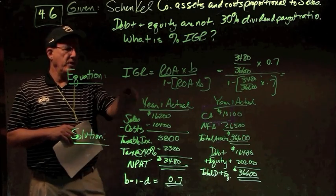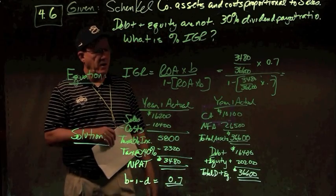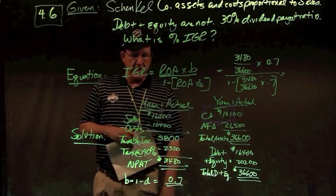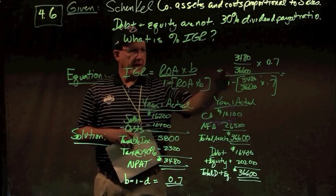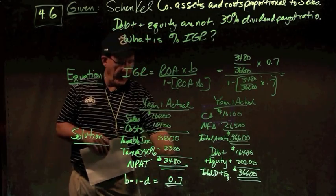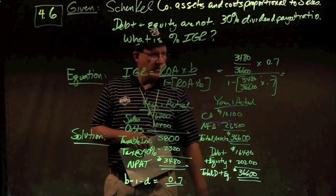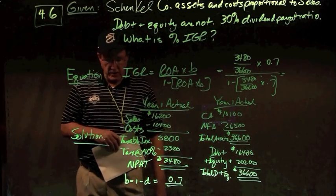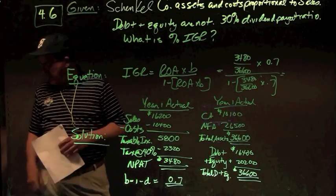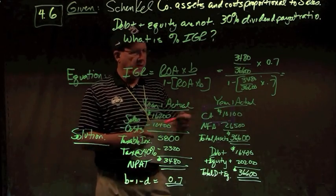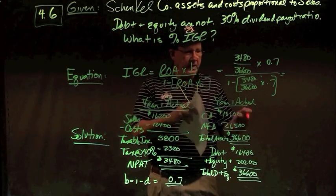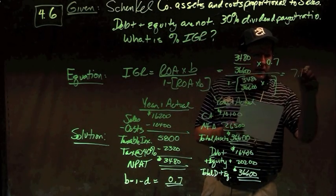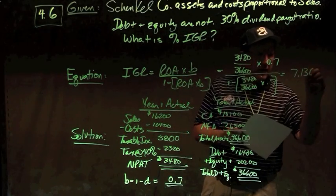So the percent IGR is ROA times B divided by one minus quantity ROA times B. Using the income statement and the balance sheet, I get my ROA by taking my net income divided by my assets, $3,480 divided by assets of $36,600. And I multiply that times my retention ratio, or B of 0.7, and divide by one minus the numerator, and I get an answer for IGR of 7.1303%.